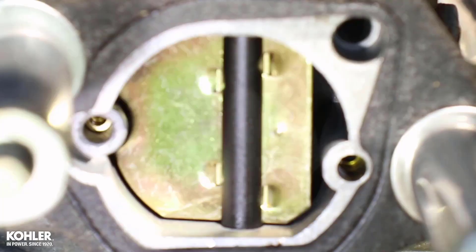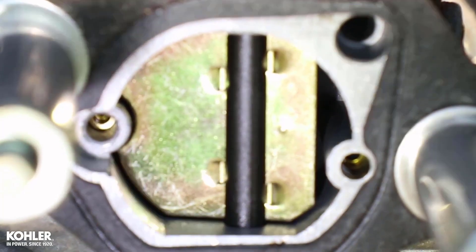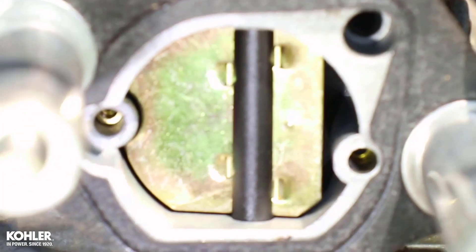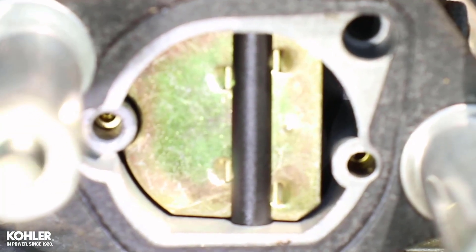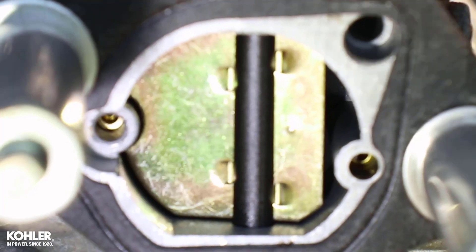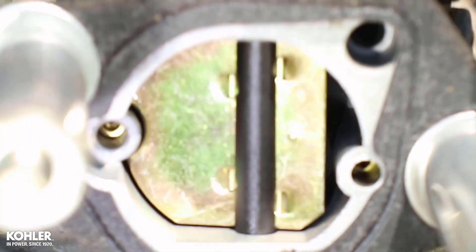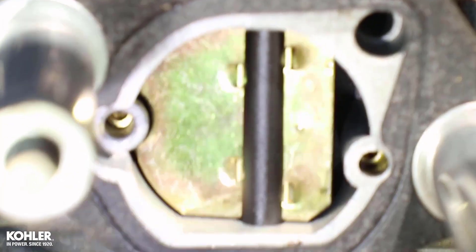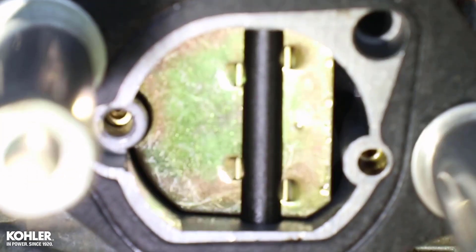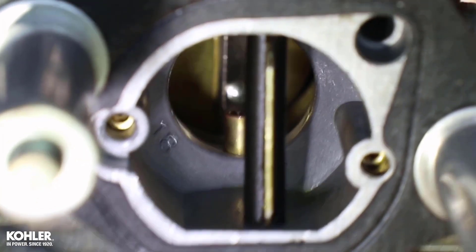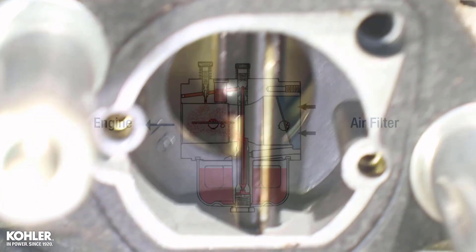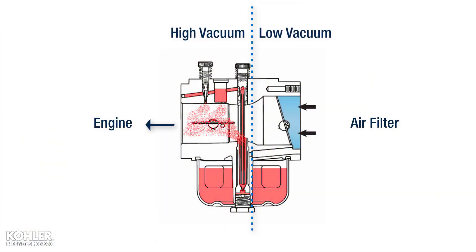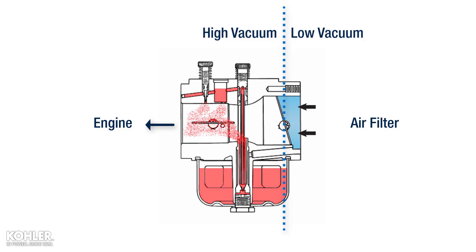Because engine speed is slow during startup, there's not enough vacuum to draw the necessary amount of fuel without adding another restriction. This restriction is known as the choke plate. Closing the choke brings high vacuum to the entire carburetor, drawing maximum fuel from all jet circuits. Check out our videos on YouTube for additional information on Kohler choke systems.